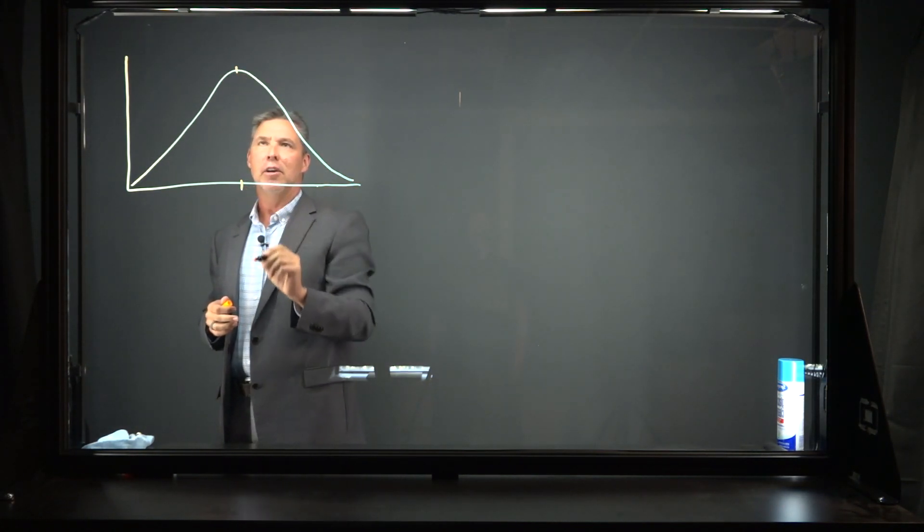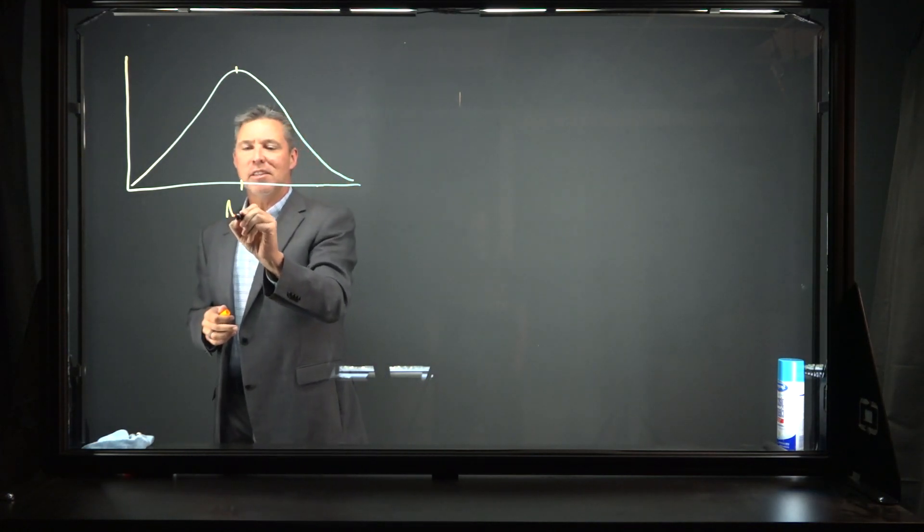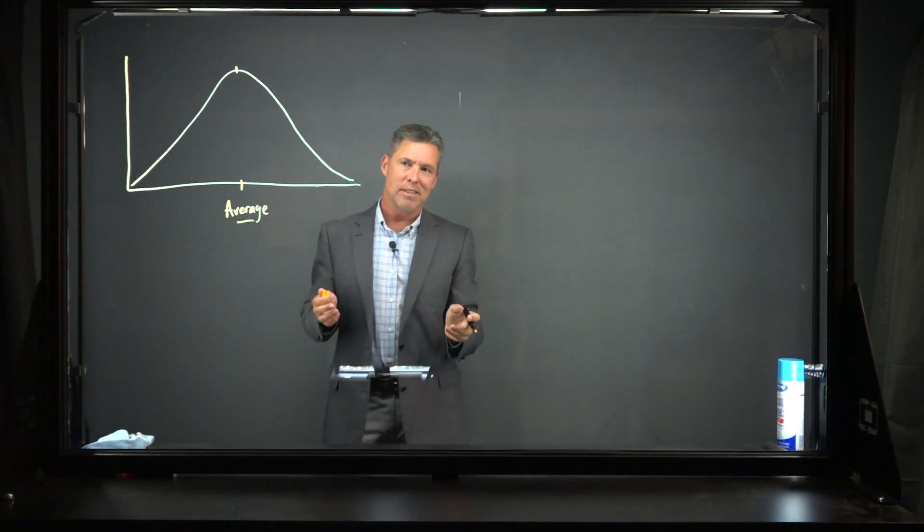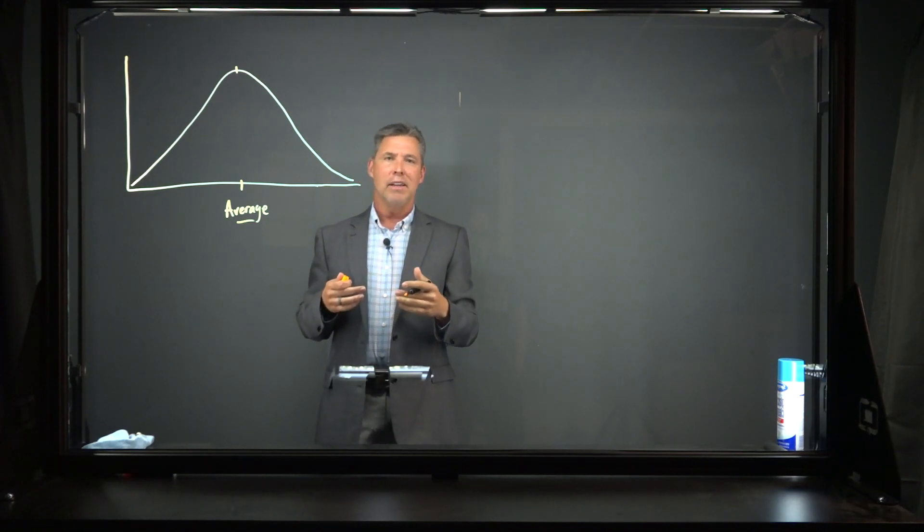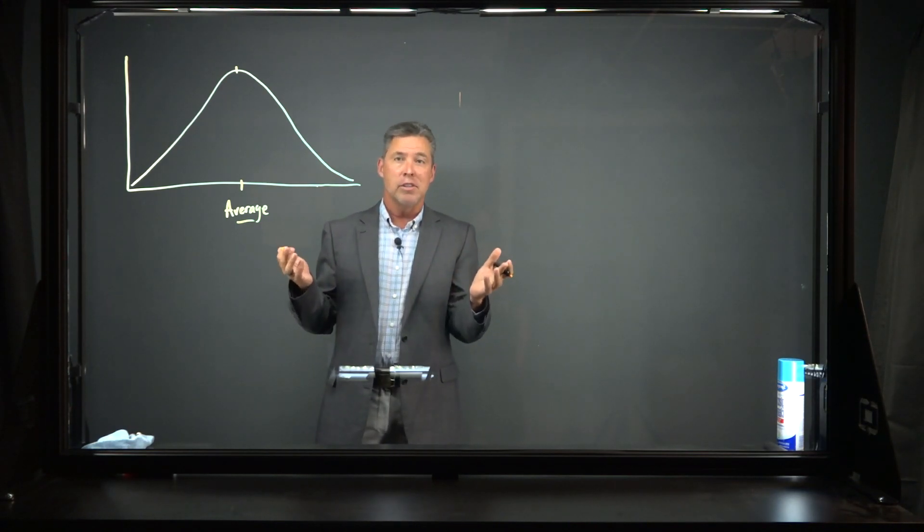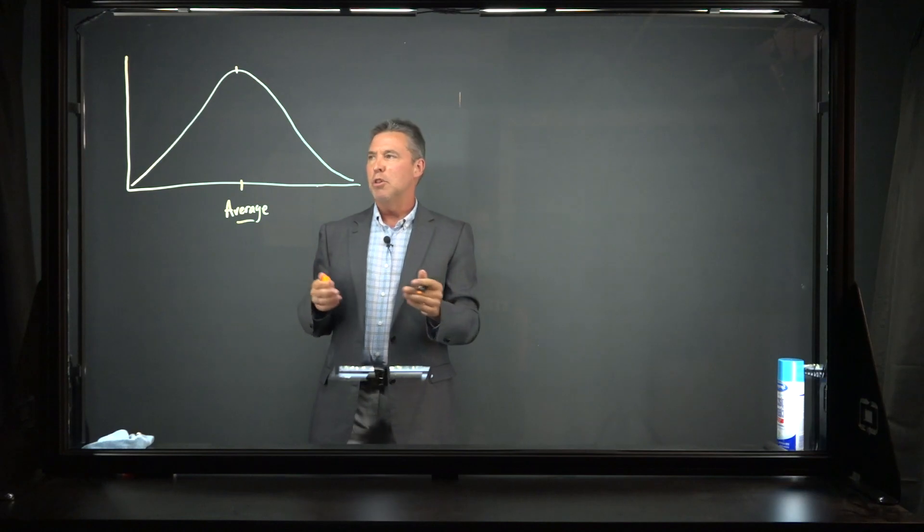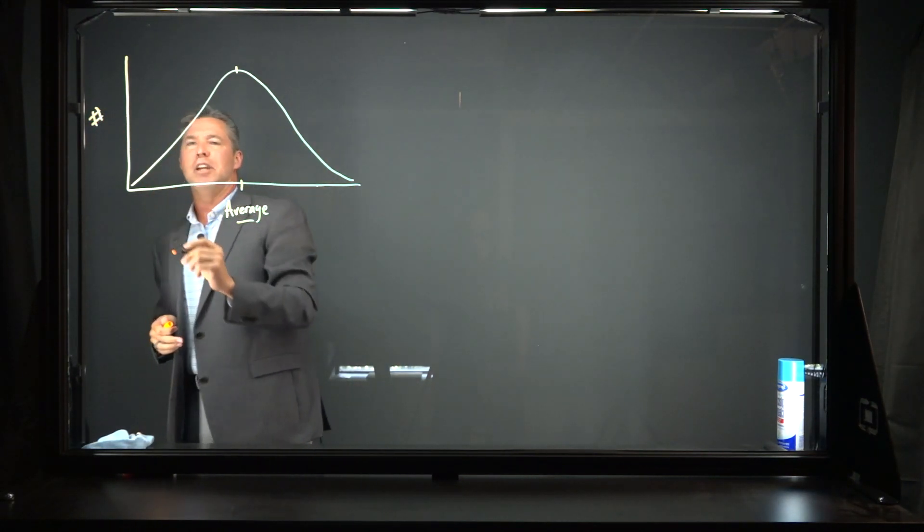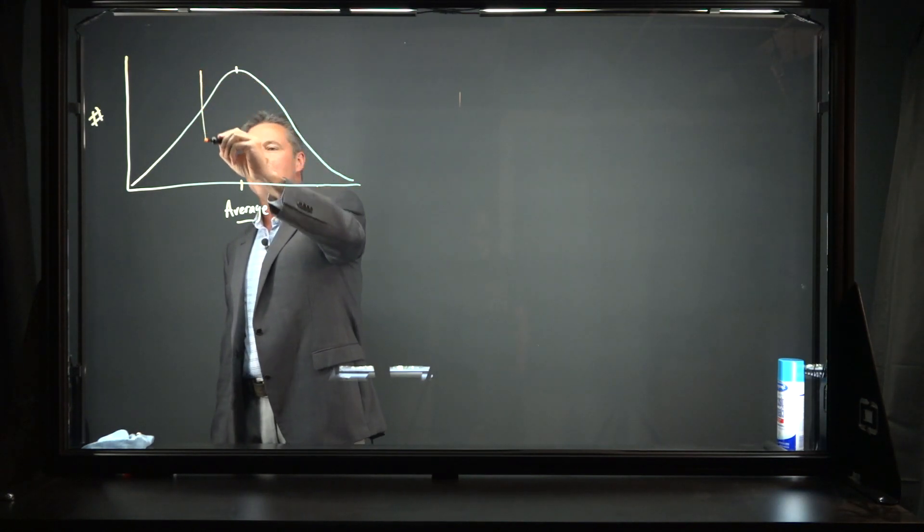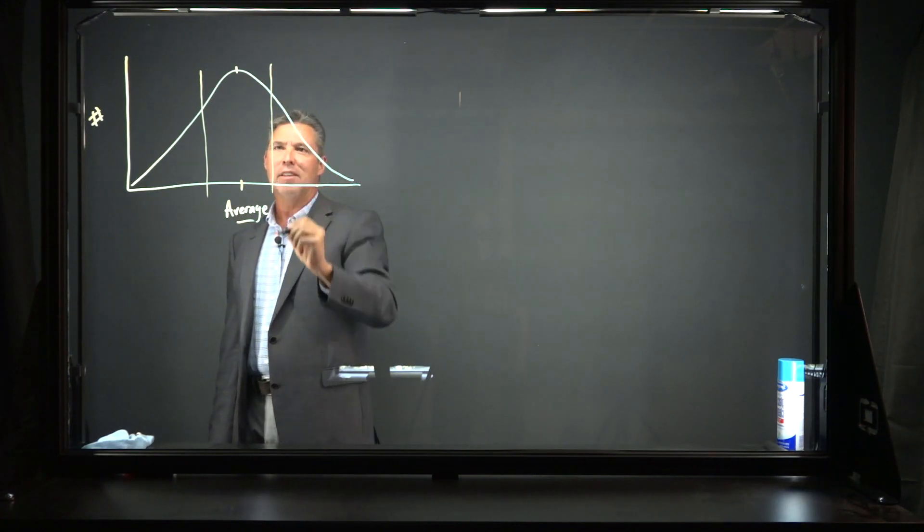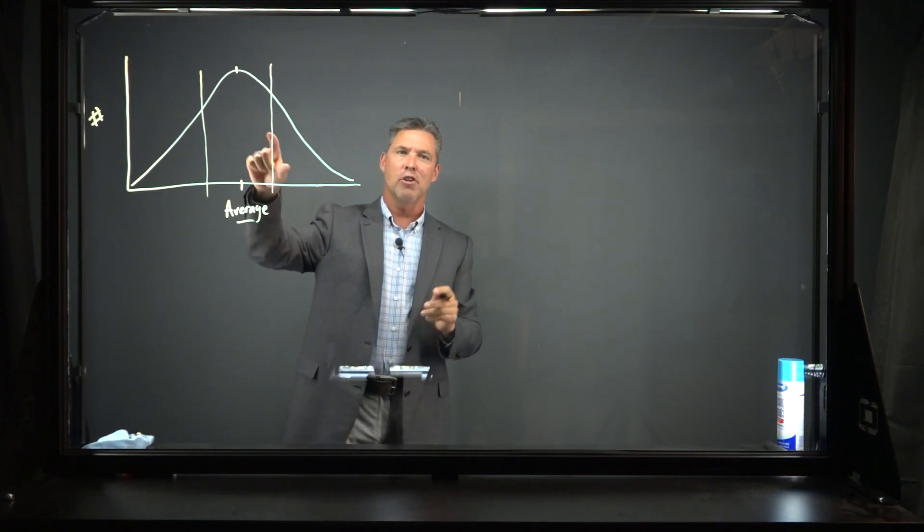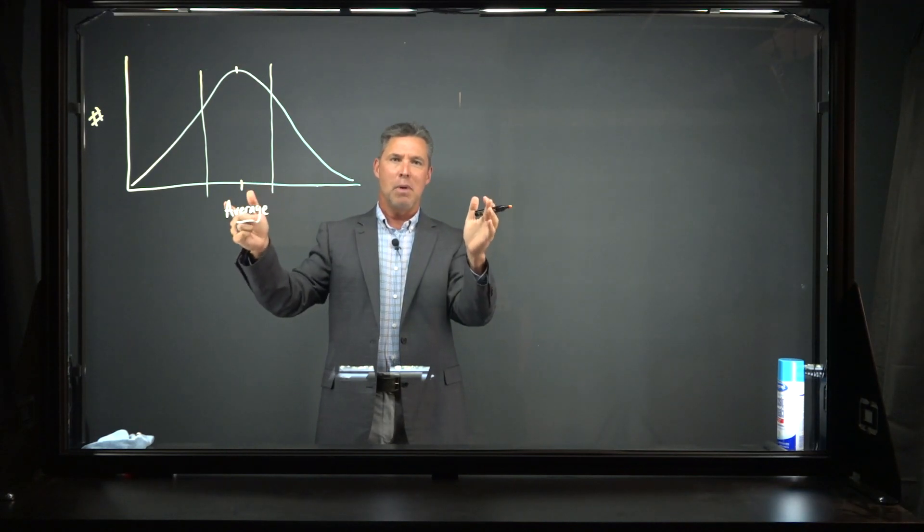Somewhere in the middle of the bell curve right here is what we call the average. This is the way that the average person responds to whatever question you might be asking them. In this context, what we're looking at is the average person's response to the COVID vaccine or to the COVID virus itself. Up on this axis is the number of people in the population. The majority of people on this curve can be found in this area, the greatest percentage of humanity.